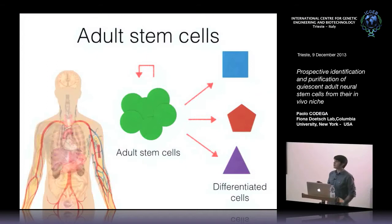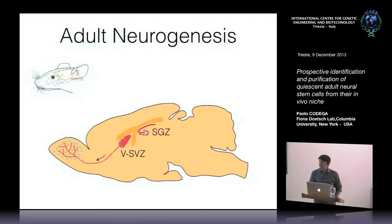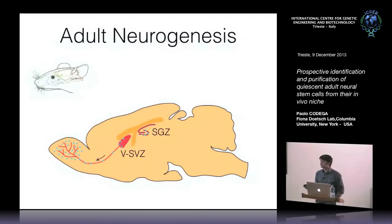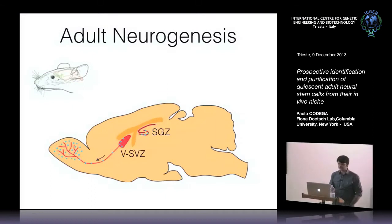But what about the adult brain? In the adult brain there are two germinal areas. One is the subgranular zone of the hippocampus. The other is the ventricular zone, where neuroblasts are generated every day and migrate along the rostral migratory stream into the olfactory bulb, where they differentiate into neurons.